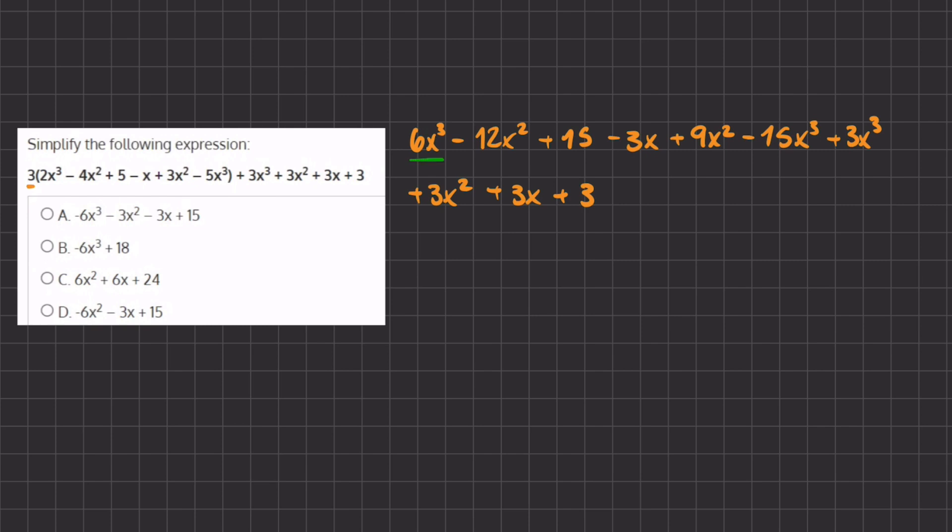We have here an x³, we have here an x³, and that seems to be it. So now let's group the like terms together. We have 6 minus 15 plus 3, so that gives us all in all a negative 6x³.